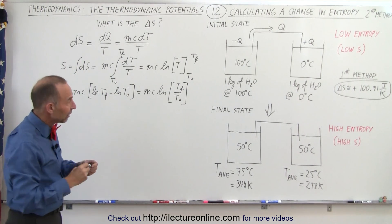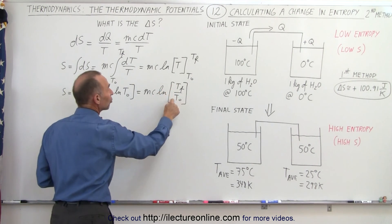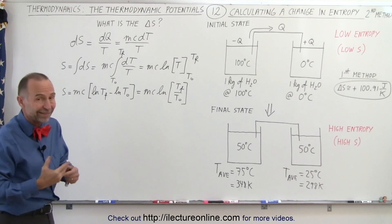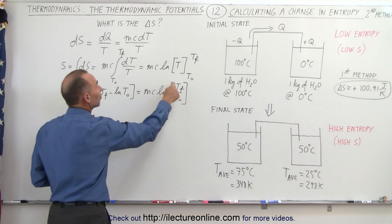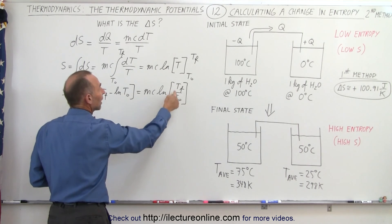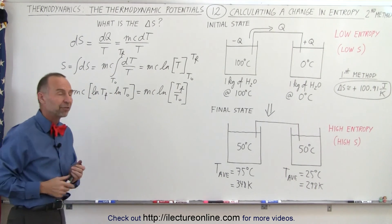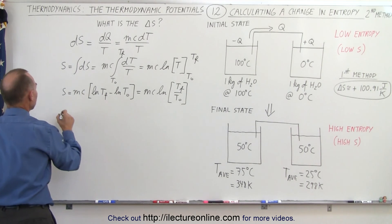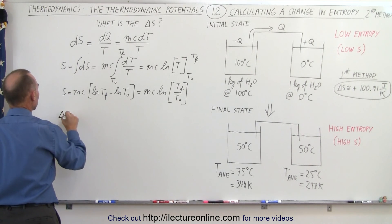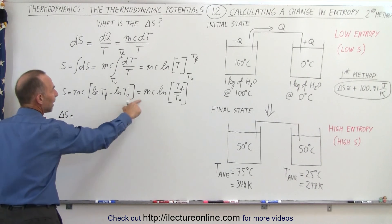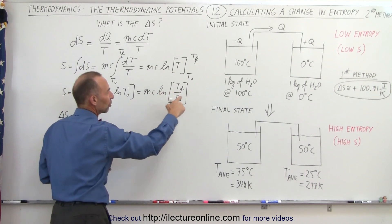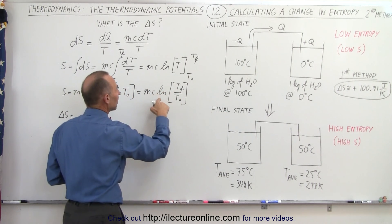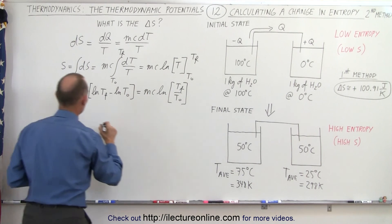Notice: when T_final is smaller than T_initial, this will be a negative quantity because the natural log of a number less than one is negative. If T_final is bigger than the initial temperature, then the natural log of that will be a positive quantity. So now applying this, the total change in entropy equals mc times the natural log of T_final over T_initial for the hot reservoir, plus mc times the natural log of T_final over T_initial for the cold reservoir.